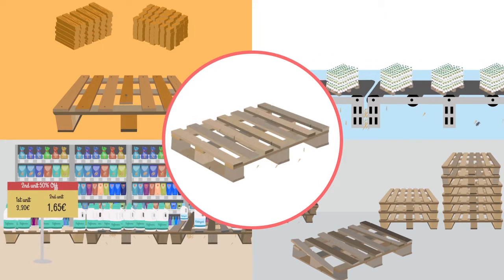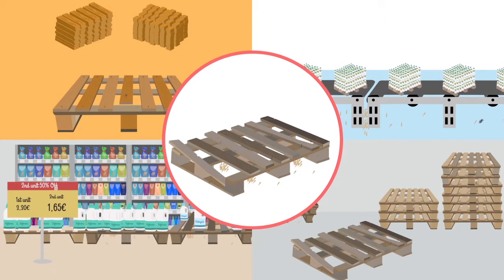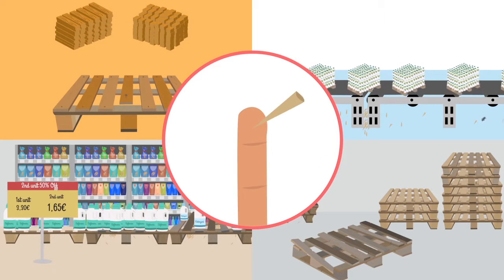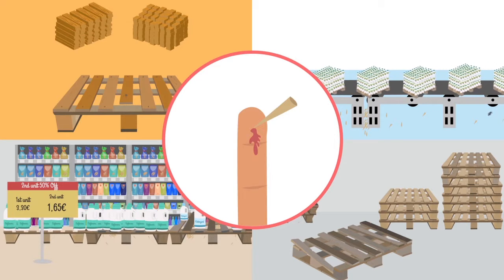The pallet becomes more dilapidated during each stage of the journey, leaving a trail of splinters and fragments. It becomes more difficult to handle, resulting in work accidents and inconvenient rejections on the production lines.